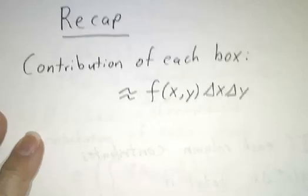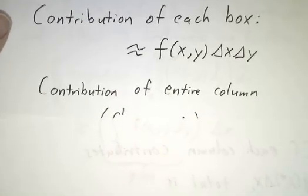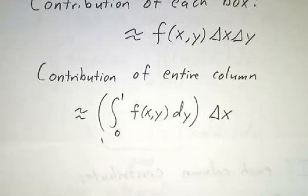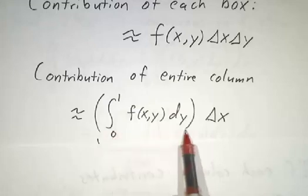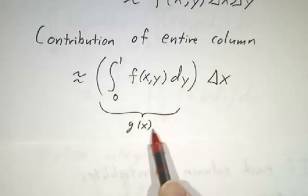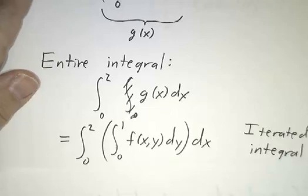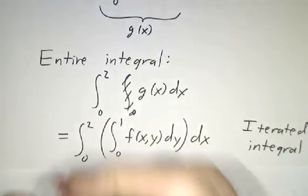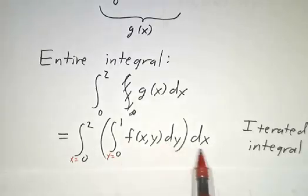To recap: you chop things up into boxes and the contribution of each box is the function times Δx times Δy. If you put all the boxes in a column together and chop vertically finer and finer, in place of a sum over f you get an integral — you integrate over y to get the entire column, with a factor of dx remaining. We call that g, and the entire integral is the integral of g dx, which we write as the integral from 0 to 2 in x of the integral from 0 to 1 in y of f dy dx. This is called an iterated integral.